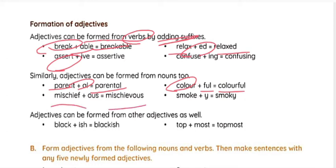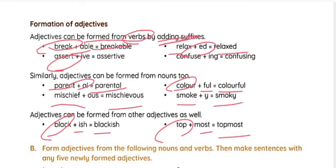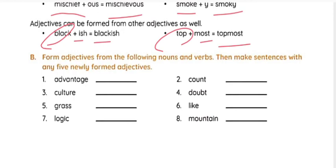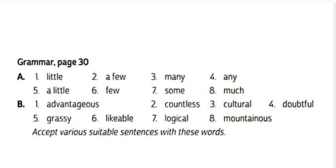More noun examples: 'mischief' becomes 'mischievous'; 'smoke' becomes 'smoky.' Adjectives can also be formed from other adjectives: 'black' + 'ish' = 'blackish'; 'top' + 'most' = 'topmost.' Here are the exercises — you have to add suffixes to complete the words. For example: 'advantage' becomes 'advantageous'; 'count' becomes 'countless'; 'culture' becomes 'cultural'; 'doubt' becomes 'doubtful'; 'grace' becomes 'gracious'; 'like' becomes 'likeable'; 'logic' becomes 'logical'; 'mountain' becomes 'mountainous.'